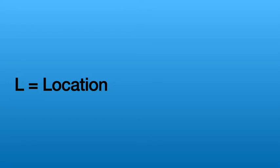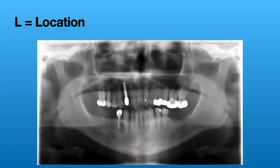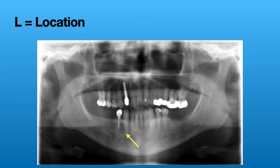We are now on to the LESIONS acronym, starting with L, which stands for location. This is pretty straightforward — it is simply where is the lesion. On this image, I'll give you a couple seconds before showing an arrow indicating exactly where that lesion is. The location would be the mandible, on the patient's right side, between the canine and the first premolar, in the mid-root area extending to the apices.